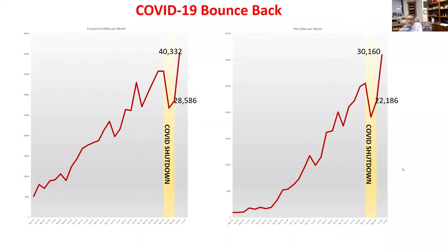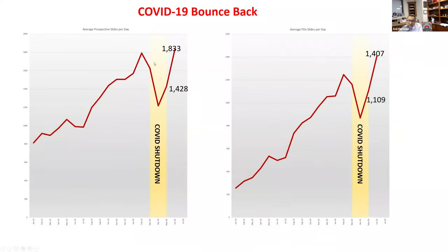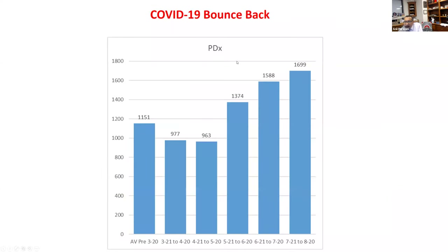During COVID, we noticed the number of slides went down, particularly during April, corresponding closely to the number of COVID cases in Ohio — a reflection of fewer patients coming to the hospital and fewer biopsies. But in July the number started going back up. We now scan about 1,800 slides for prospective primary diagnosis, with a workload of about 2,000 slides per day on average. In August, almost 1,700 slides were for primary diagnosis — pathologists not looking at glass slides.